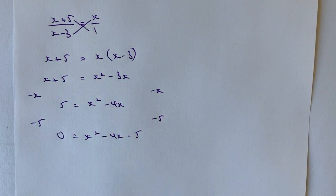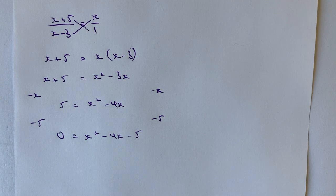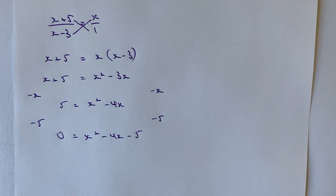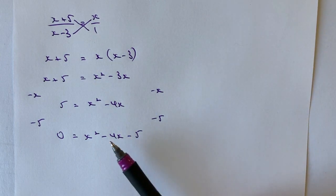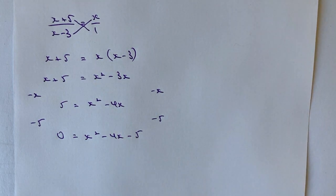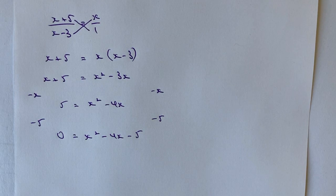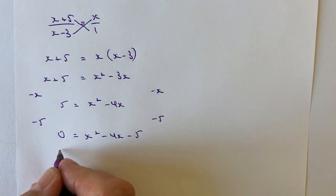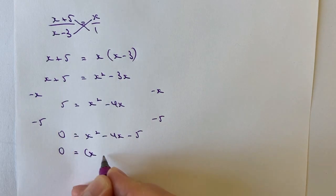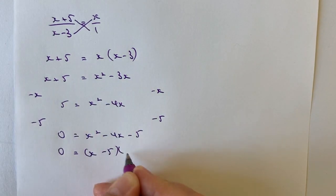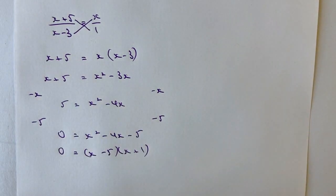And now it's really just a case of factorizing that. Now there are a couple of different ways of factorizing, but hopefully you'll recognize the two numbers that multiply to make minus 5 and add to make minus 4 are going to be minus 5 and positive 1. So I can write that as 0 equals x minus 5 times x plus 1.